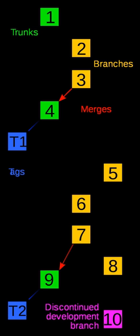DCVS, decentralized and CVS-based. Fossil, written by D. Richard Hipp for SQLite, provides distributed revision control, wiki, and bug tracking all in one solution with console and web interfaces, as a single portable executable and single repository file.